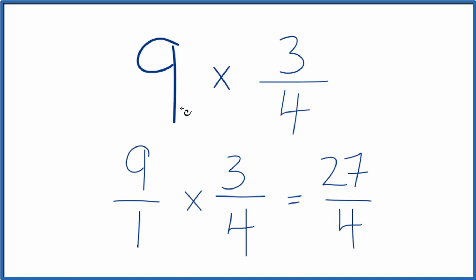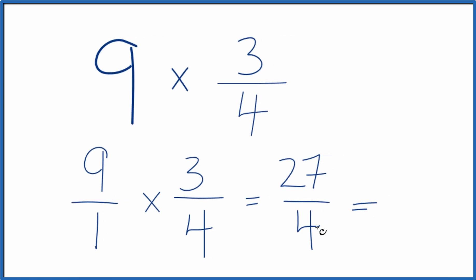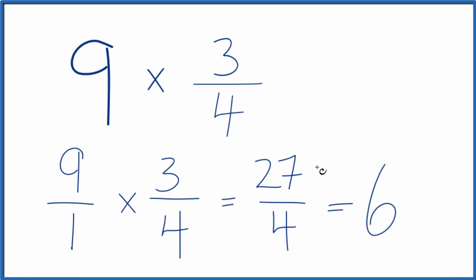So we end up with, when we multiply 9 times 3 fourths, we get 27 fourths. This is an improper fraction, so you could change it to a mixed number. 4 times 6 is 24, and then we'd have 3 left over.